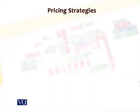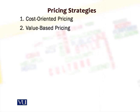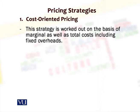We can have three different kinds of pricing strategies. The first is cost-oriented pricing. The second is value-based pricing. The third is sliding scale pricing. All three are direct translations of the three different pricing objectives we may have, and therefore we must ensure that the objective has a very clear link and alignment with the strategy we intend to put in place.